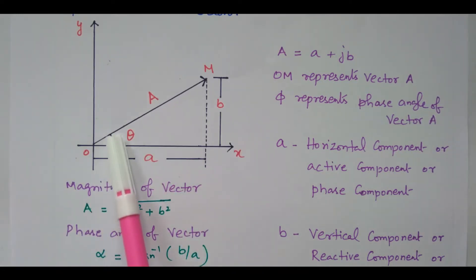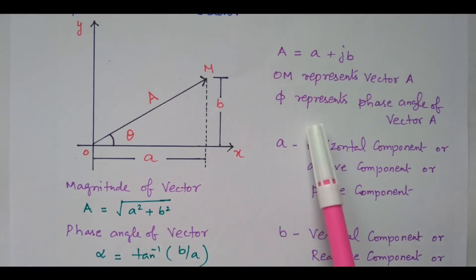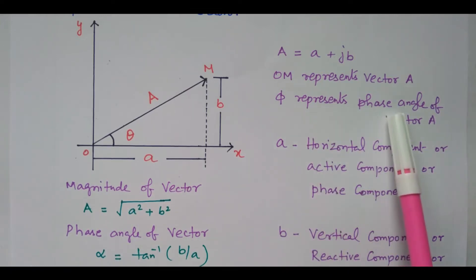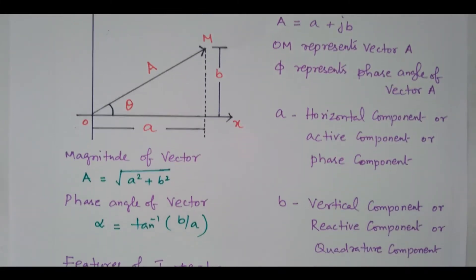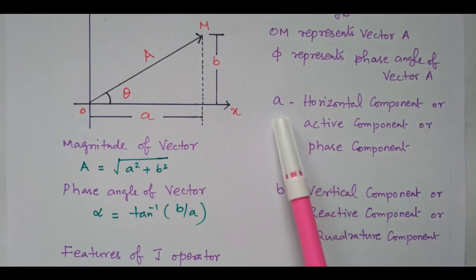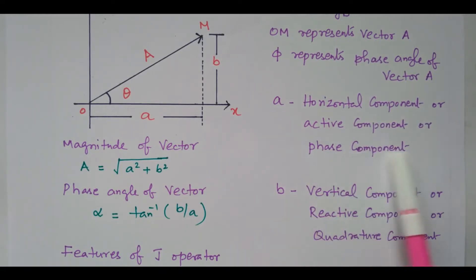There is an angle between A and B, which is theta. What is that theta? It represents the angle of vector A. Theta is the angle of vector A. The A is nothing but the horizontal component, or active component, or phase component. It is the real term.